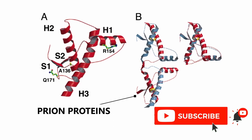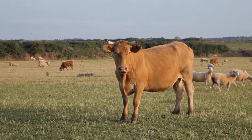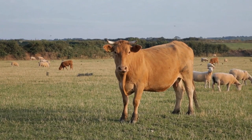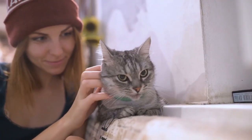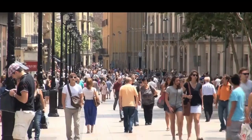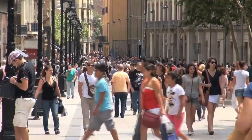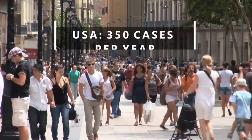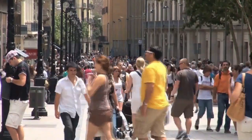How common are they? Prions affect people, animals, and microbes. Prions have been found in livestock such as sheep and cows, pets such as cats, wildlife such as deer, and even brewer's yeast. In humans, prion illnesses are usually uncommon. In the United States, about 350 new cases of prion disease are recorded each year.